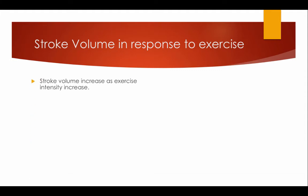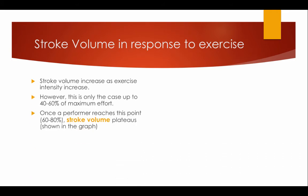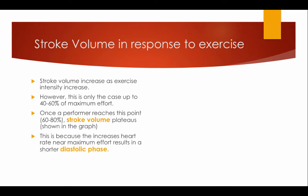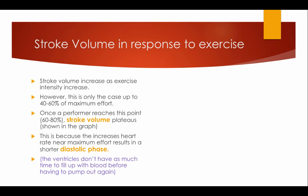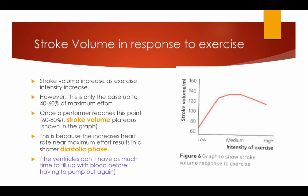Stroke volume in response to exercise. Stroke volume increases as exercise intensity increases; however, this is only the case up to 40 to 60% of maximum effort. Once a performer reaches this point, stroke volume plateaus. This is because the increase in heart rate near maximum effort results in a shorter diastolic phase — in other words, the ventricles don't have as much time to fill up with blood before having to pump out again. As the diastolic phase shortens, stroke volume decreases as intensity continues to increase.